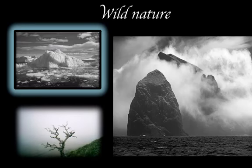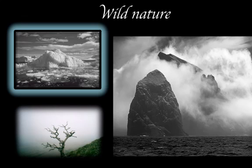Gothic fiction often features remote and rugged landscapes, from imposing icebergs to thickly wooded forests in faraway lands like Transylvania in Bram Stoker's Dracula. As well as highlighting nature's strength and savagery, these landscapes allow writers to explore the excitement and strangely pleasurable fear of the dangerous and unfamiliar. Examples from literature include the moors in Wuthering Heights, the blasted heath in Macbeth, and the Antarctic wastes in Frankenstein.